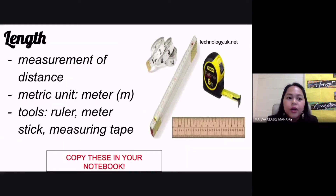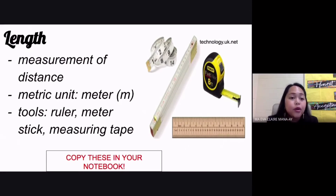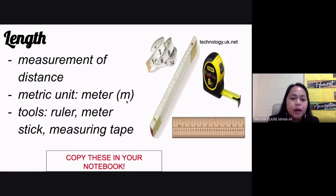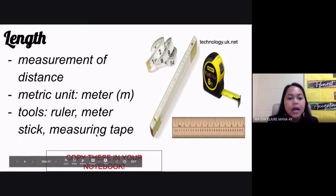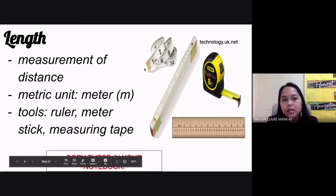Now there are several quantities that we measure in the lab. The first one, of course, would be length — that's the measurement of distance. We'd always be using the metric unit of meter, represented by the small letter M. Some tools that we use for the measurement of length include your ruler, your meter stick, and your measuring tape.